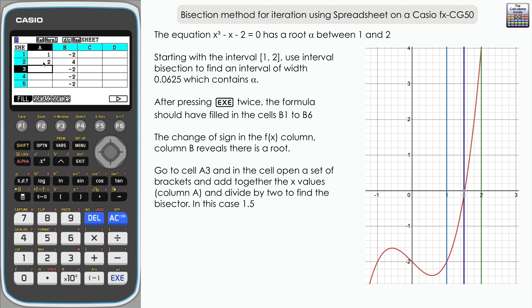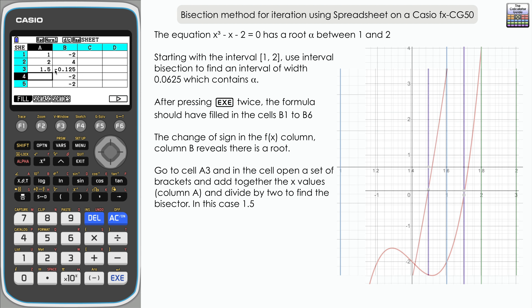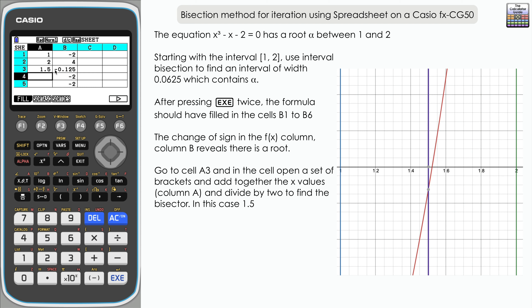We're going to do this in cell A3. Halfway between 1 and 2 is going to be 1.5 — you can put 1.5 in directly, but I'll show the fuller method. We're adding the two values together in brackets — 1 plus 2 — then dividing by 2 to give us our bisection. Press Execute and you can see we've got 1.5. The value in column B from the function is negative 0.125 — a negative value.